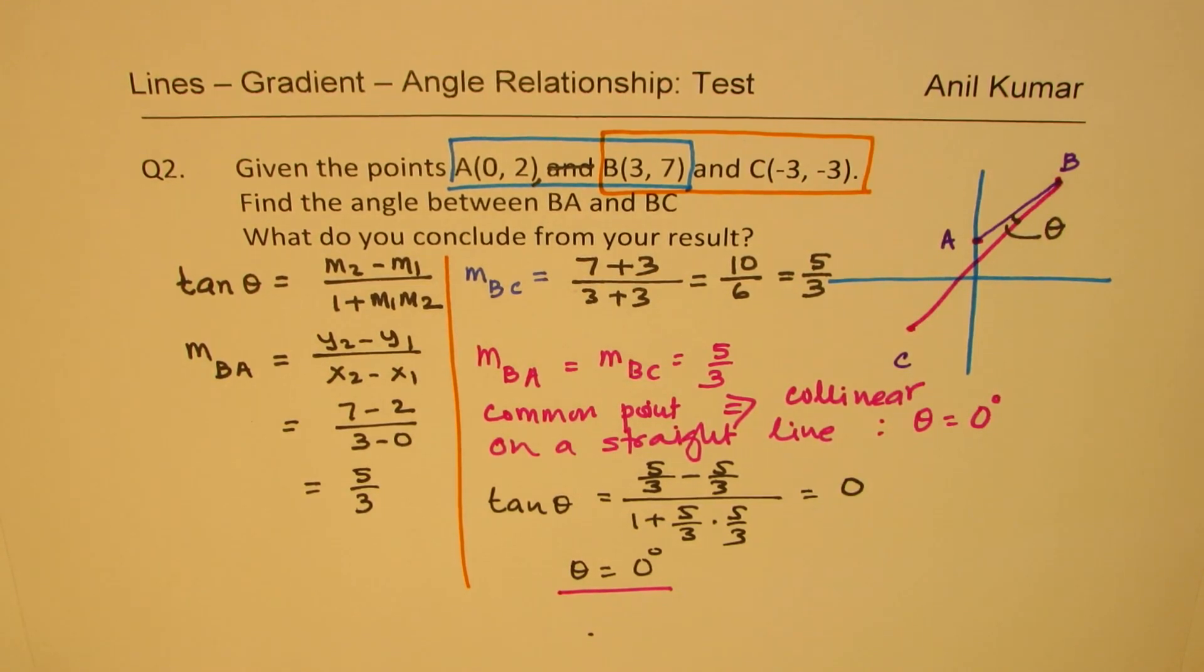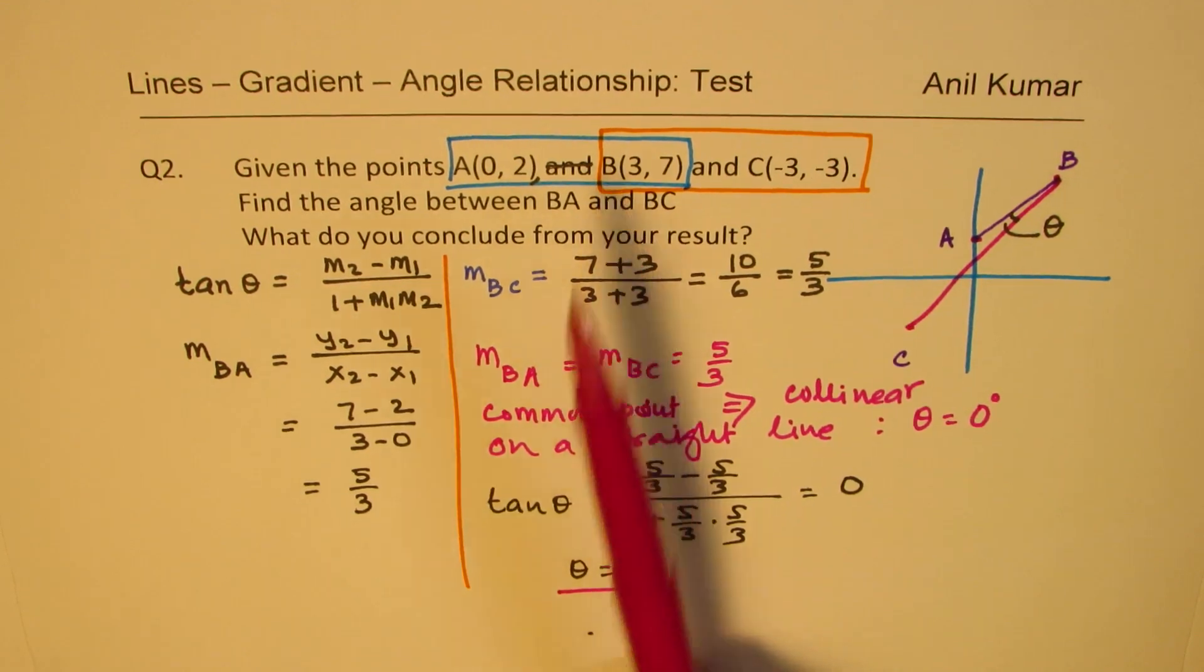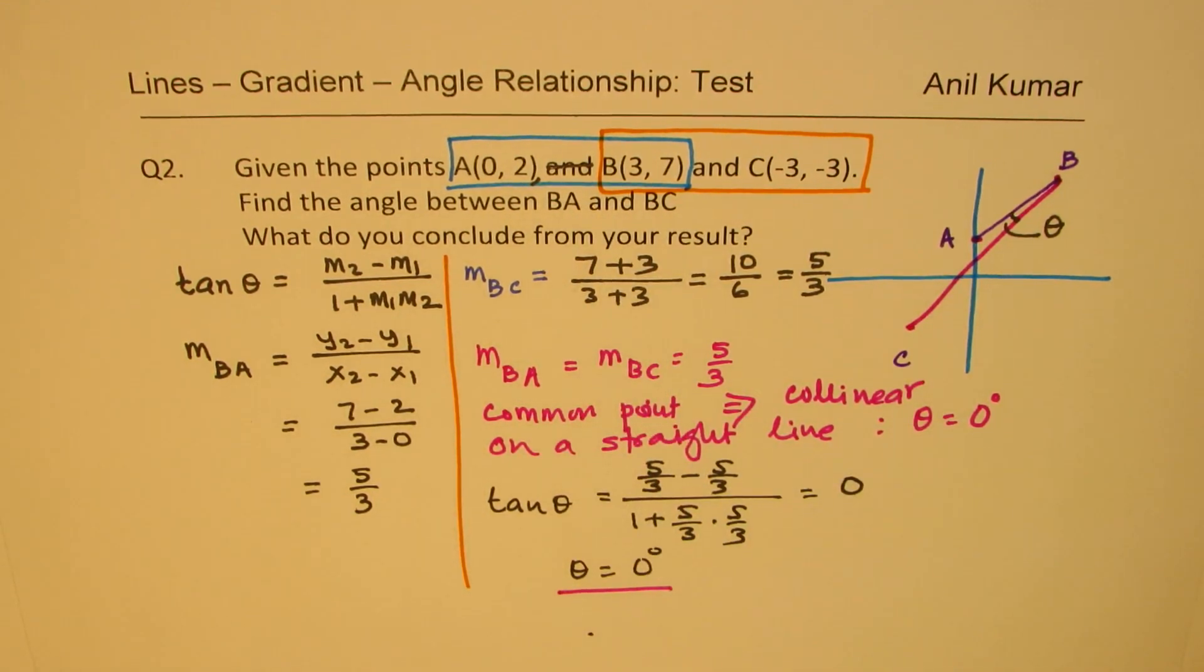So when the same slope is there, and when we have a common point as it is in this case, then they are collinear. So that is how we can actually solve this particular question. Let's move on and take more examples in this series. Thank you.